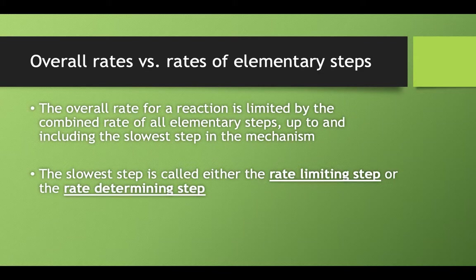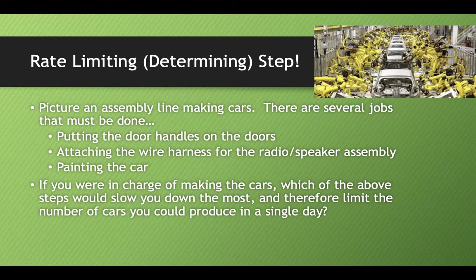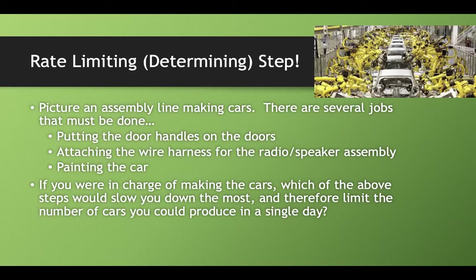If we're comparing the overall rates versus the rates of those elementary steps, the overall rate is limited by the combined rate of all the steps from start to finish, up to and including the slowest step in the mechanism. The slowest step has a special name. We either call that the rate limiting step or the rate determining step.